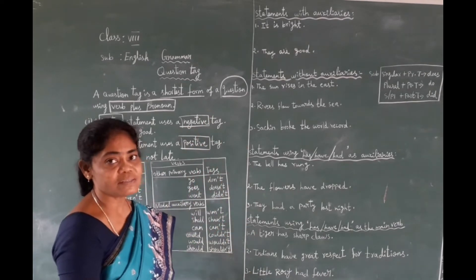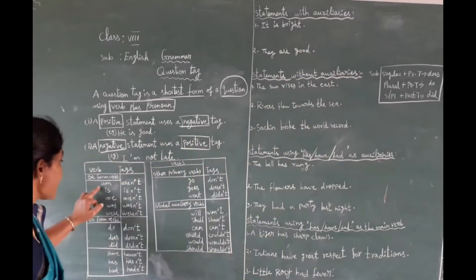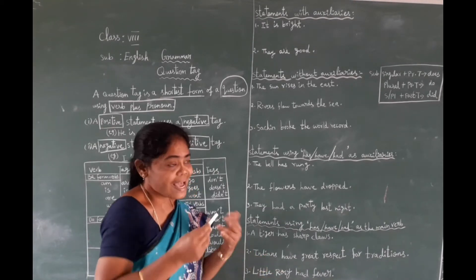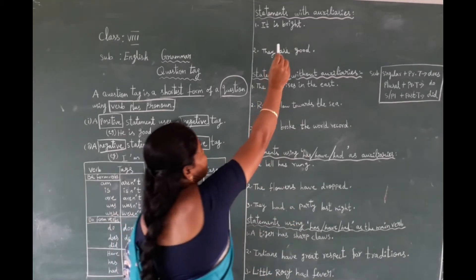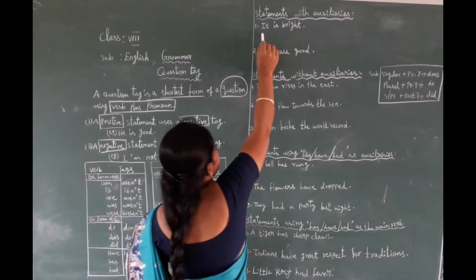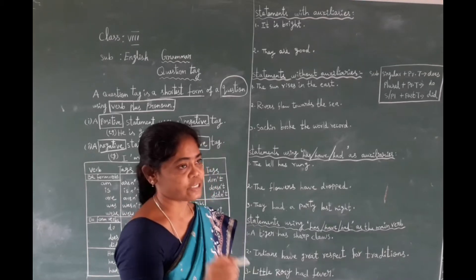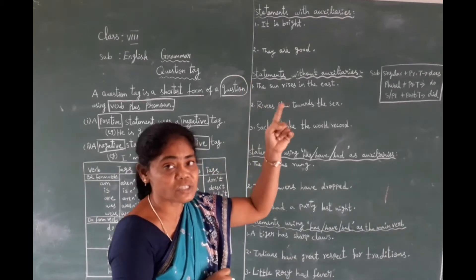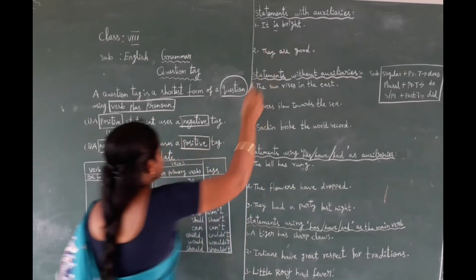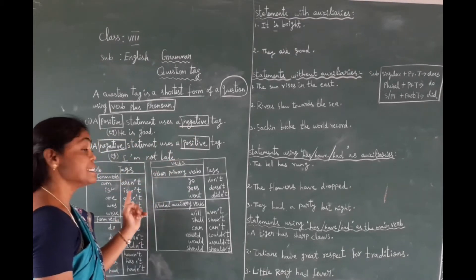Now let us see some examples with auxiliaries. First example: 'It is right.' The given statement is positive. The auxiliary present is 'is', so the positive statement takes a negative term. The tag will be 'isn't'. We follow the rule: comma, then the negative auxiliary 'isn't', then the subject pronoun. So the tag is: 'isn't it?'